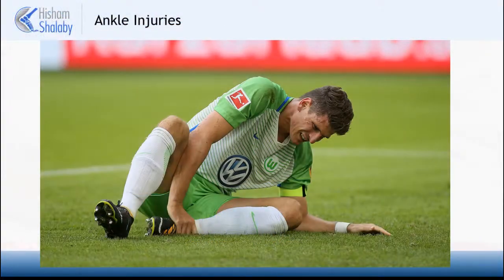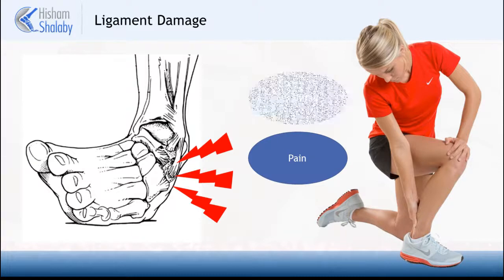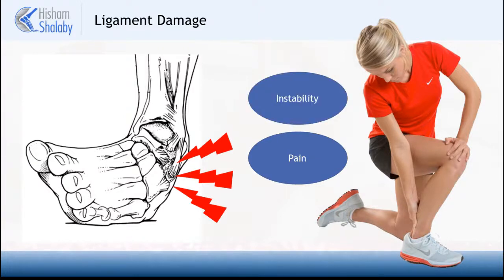The ankle joint is a very common site for injury during sports and many of our daily activities. Most twisting and inversion injuries of the ankle joint result in ligament damage. This presents with a combination of pain and instability that usually requires short periods of immobilization followed by physiotherapy. The management of ankle joint ligament injuries will be covered in a different video.